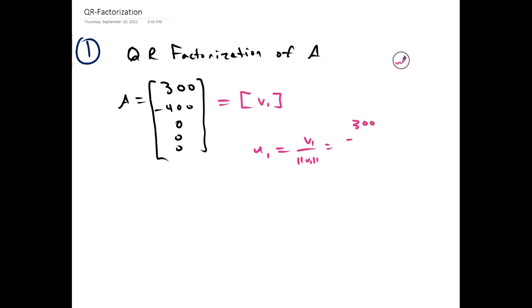So, 300, -400, 0, 0, 0 divided by 500, which is what the magnitude of that vector is. So that gives us 3/5 and -4/5, and 0, 0, 0.